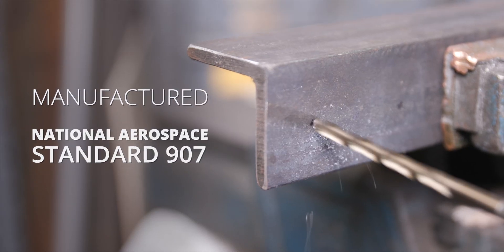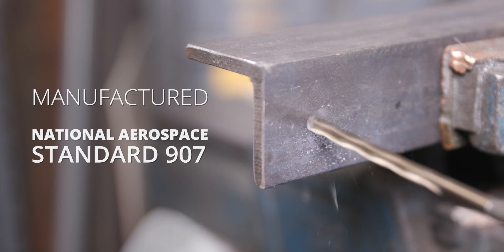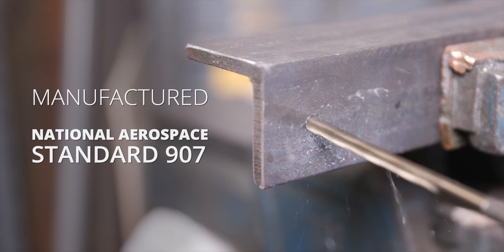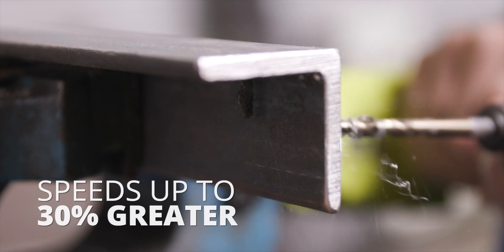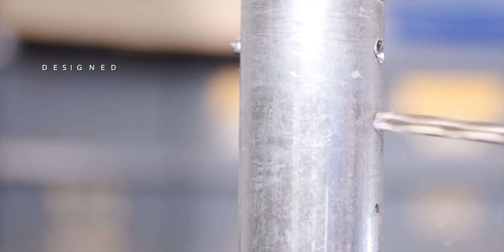Drill America Cobalt Hex Shank Drill Bits are manufactured to National Aerospace Standard 907. They display high red hardness, permitting speeds up to 30% greater than with conventional M2 high-speed steel.